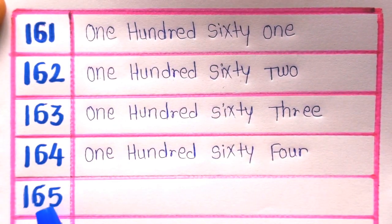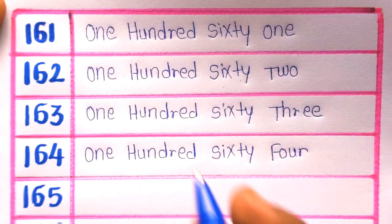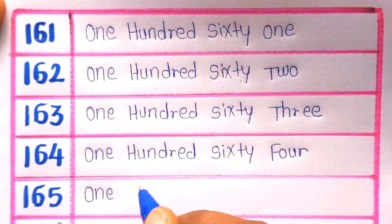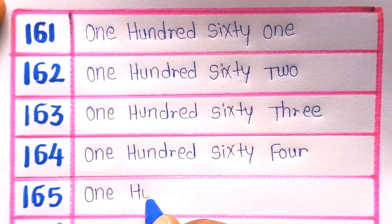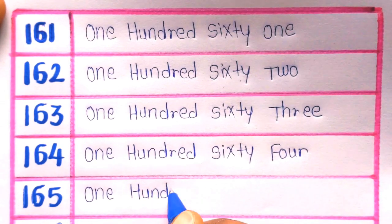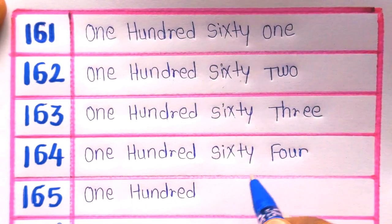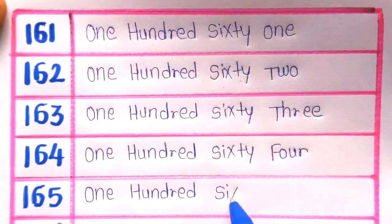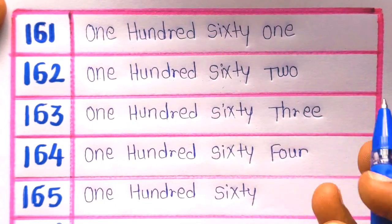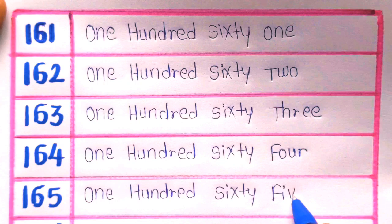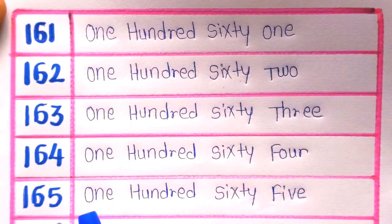Next is 165: O-N-E, ONE, H-U-N-D-R-E-D, HUNDRED, S-I-X-T-Y, SIXTY, F-I-V-E, FIVE. 165.